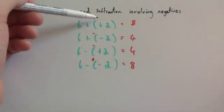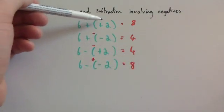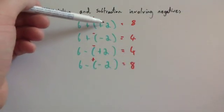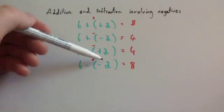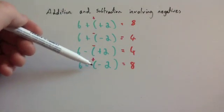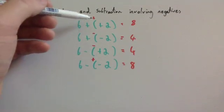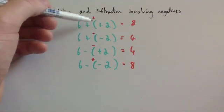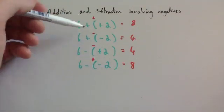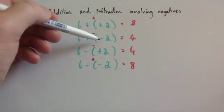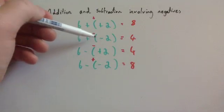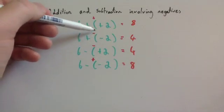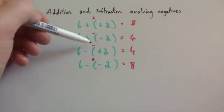So whenever you have two signs that are directly beside each other that are the same — a plus and a plus, or a minus and a minus — you add, and you just replace them with a plus sign. And if you have two signs that are directly beside each other that are different to each other, you replace them with one subtract sign.